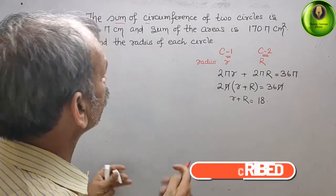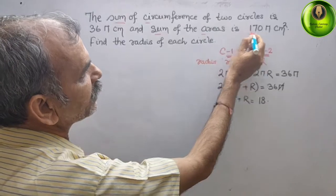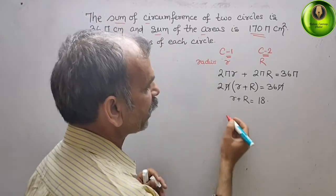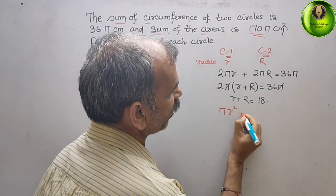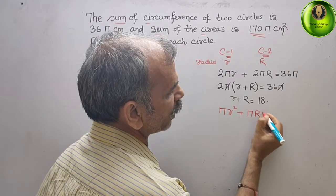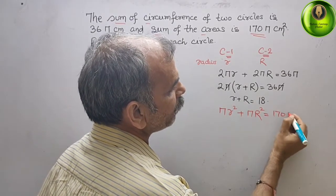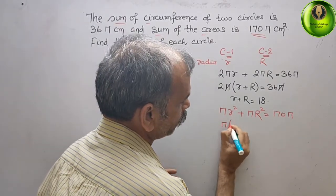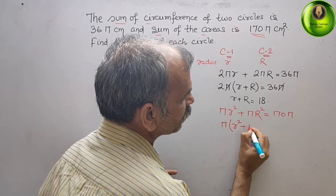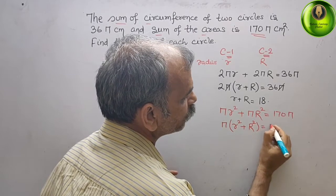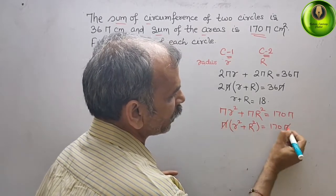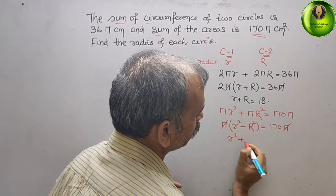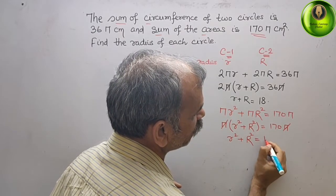The second equation: the sum of the areas is 175π. The area of a circle is πr². So we write π small r² plus π capital R², which gives 175π. Taking π as common, pi cancels, and the second equation is: small r² plus capital R² equals 175.